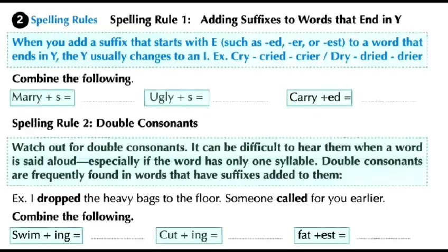As you see, we change the letter Y and add -ies. So 'marry' becomes 'marries.' For 'ugly,' we change the Y to I to get 'uglies.' For 'carry,' we change Y to I and add -ed to get 'carried.'